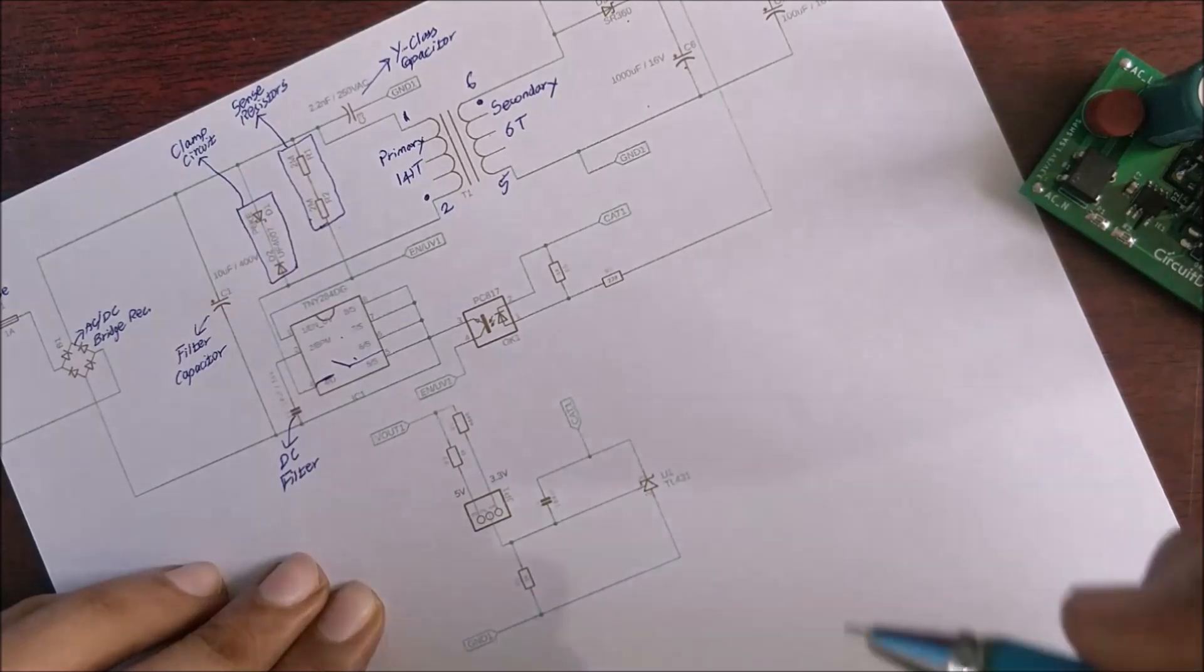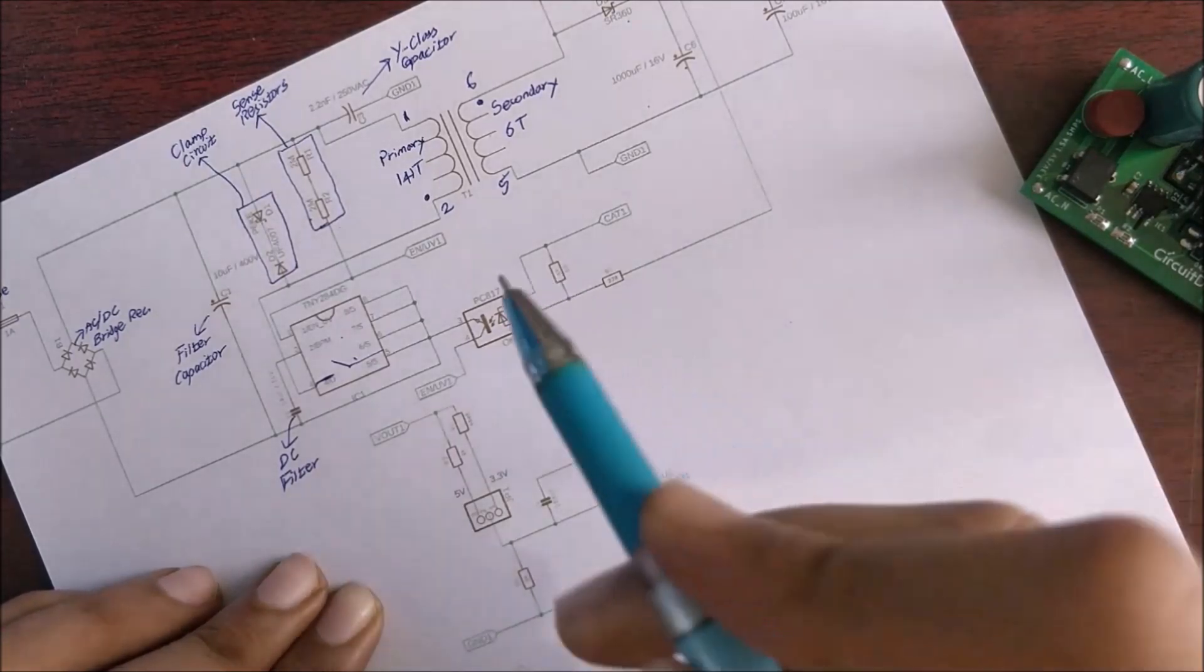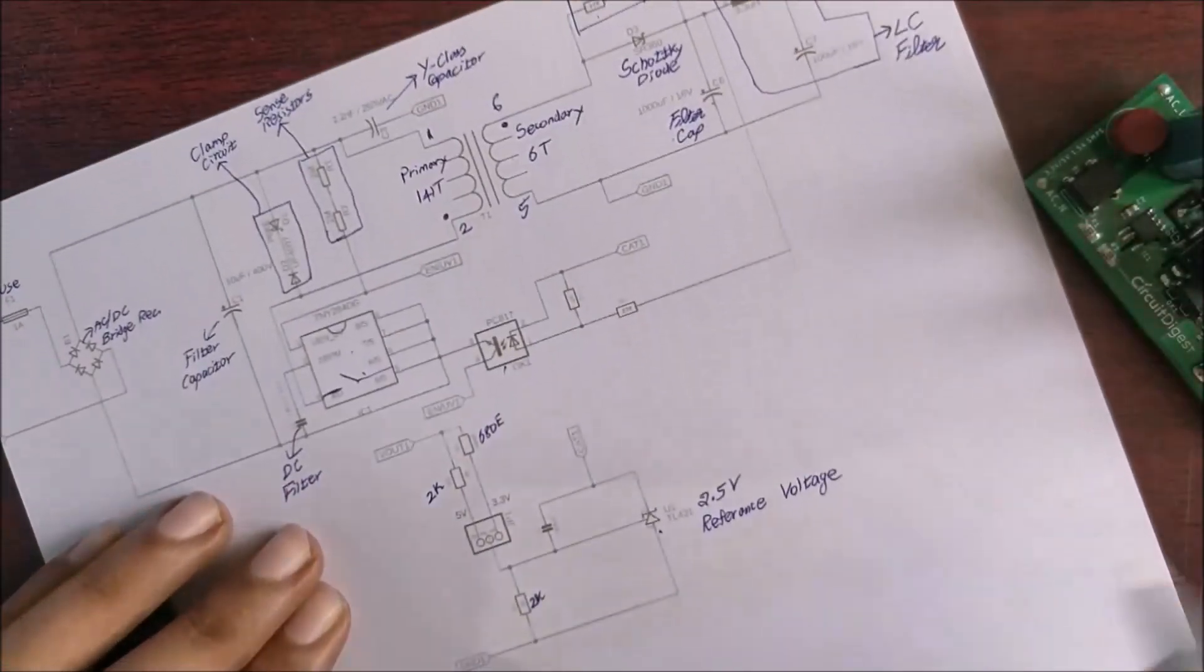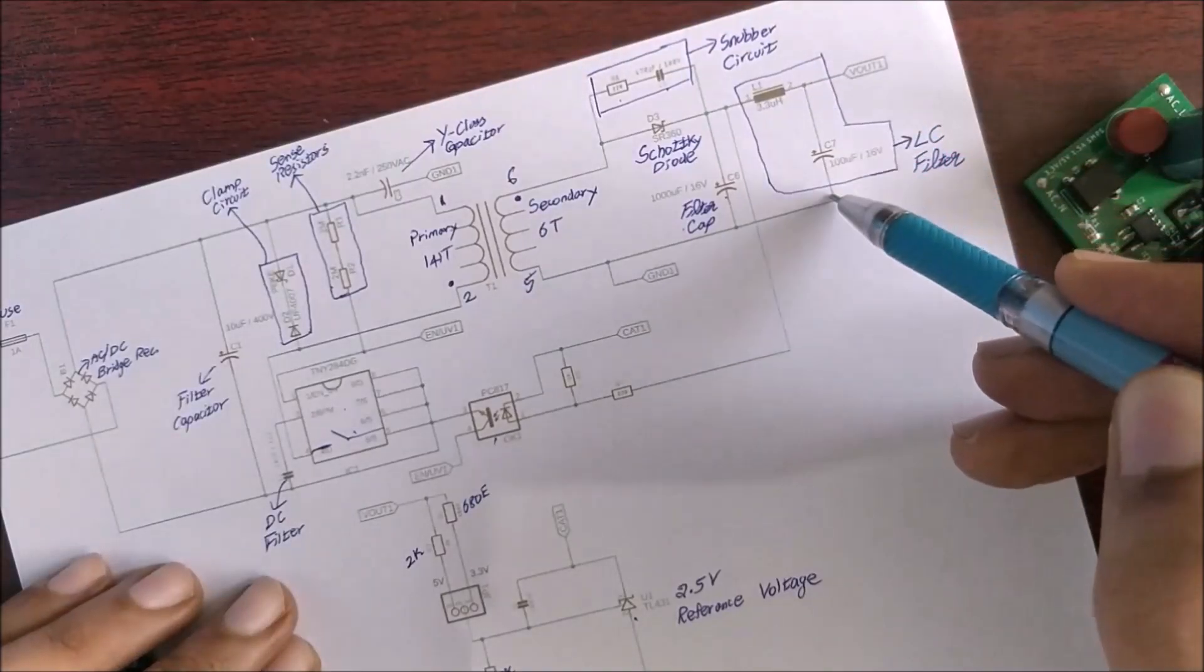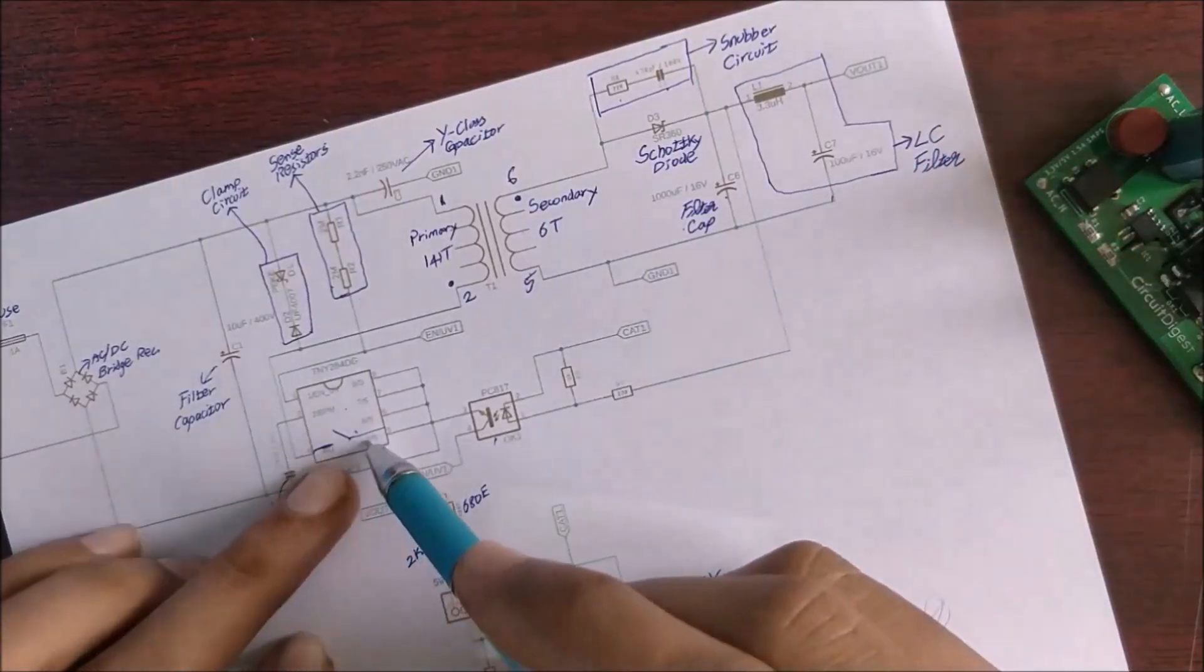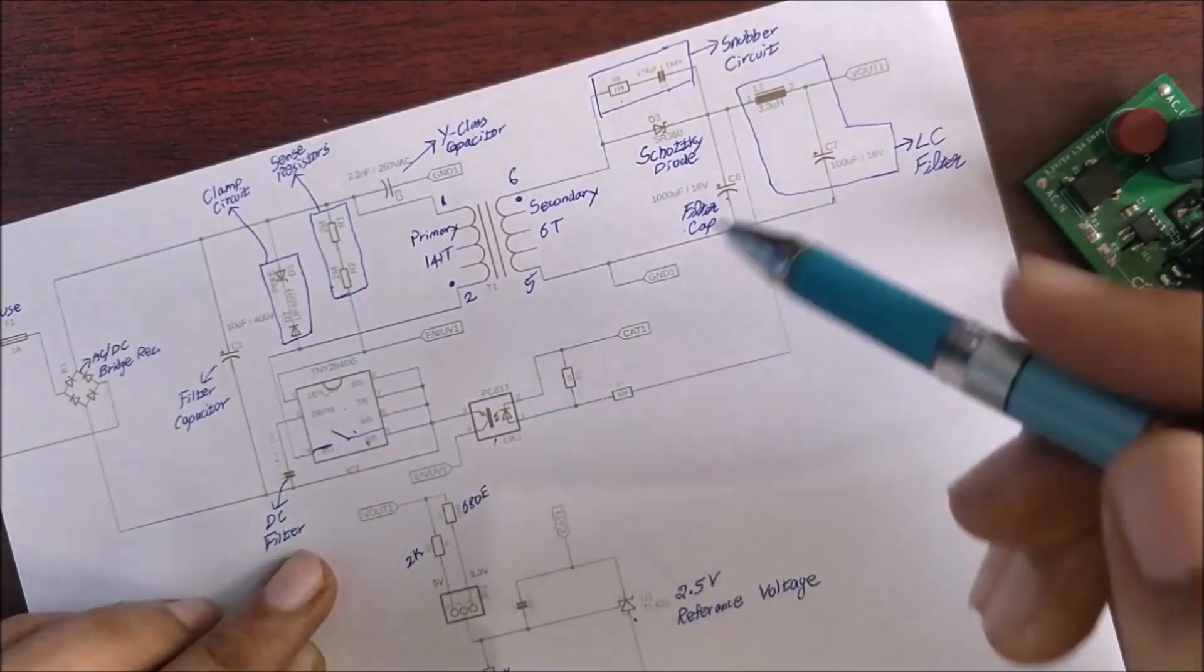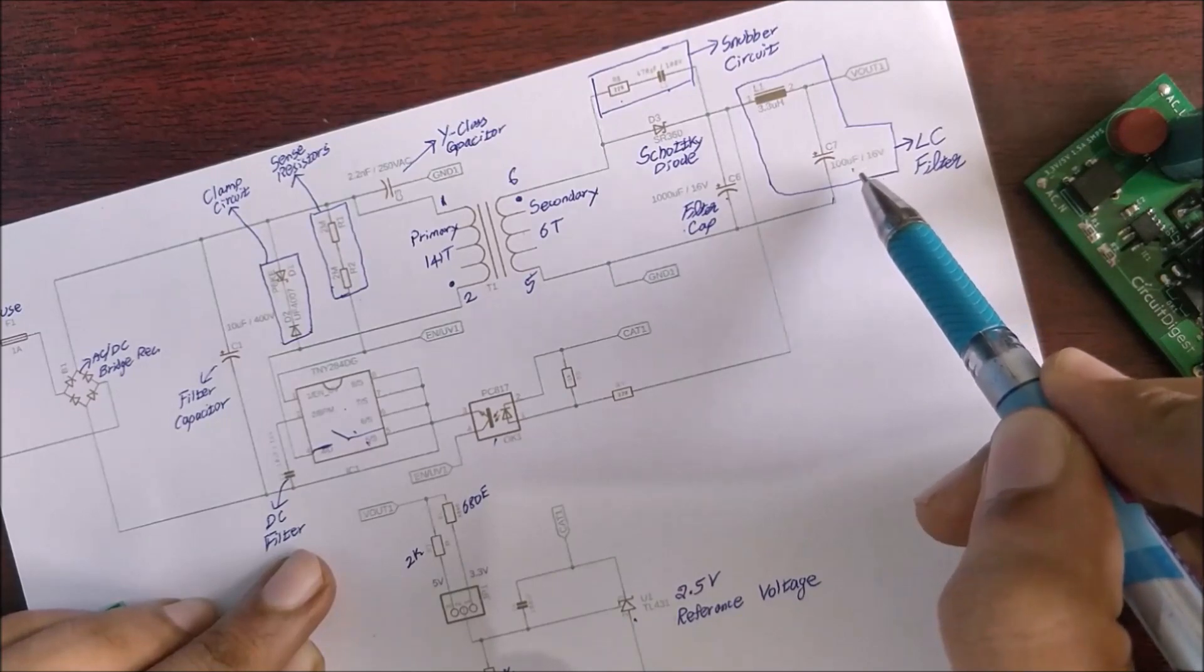Let's look into the feedback side. It mainly consists of two components. One is the reference voltage regulator and the other is the optocoupler. Now the main purpose of this feedback section is to sense the output voltage over here and tell our controller whether to turn on or turn off.